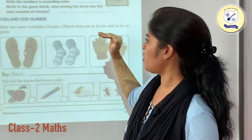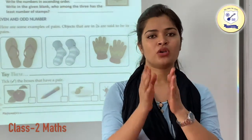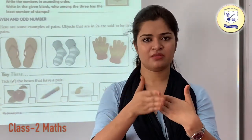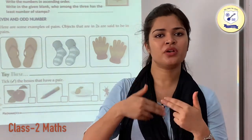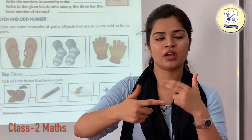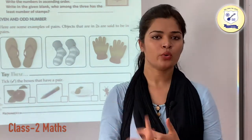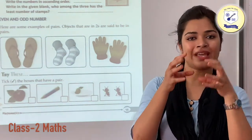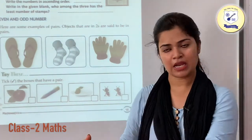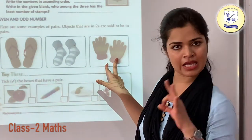Objects that are in pairs of 2 are said to be even. We begin from 0 and when you add 2 you get 2, then 4, then 6, then 8, then 10. The numbers you get when moving 2 steps ahead are your even numbers. Here we are having 2 pairs, so this is your even number — and this is again even, and this again even.